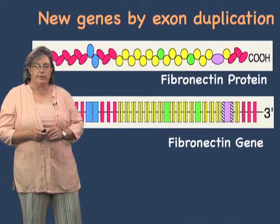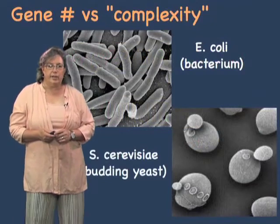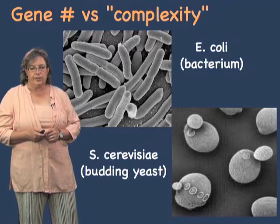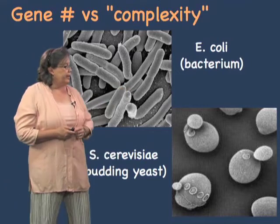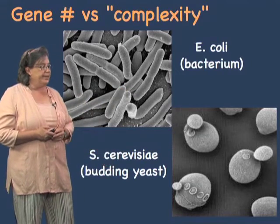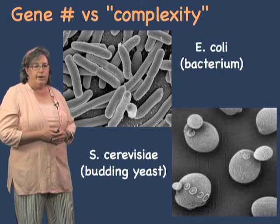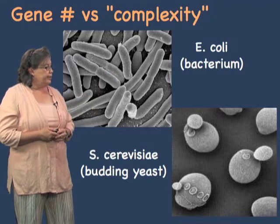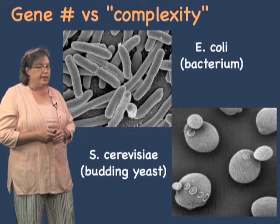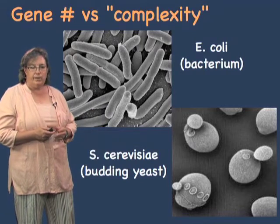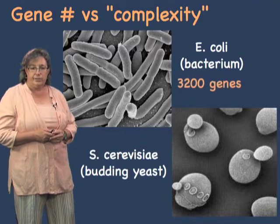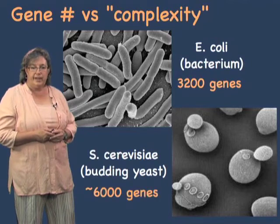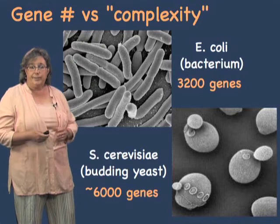We'll discuss this by looking at the gene number versus complexity problem. Let's consider how many genes different organisms have. E. coli, a bacterium in your gut, has about 3,200 genes, and S. cerevisiae, the budding yeast used to make bread or brew beer, has about 6,000 genes. By genes here, I'm talking about protein-coding genes. As expected, the simpler bacterium has fewer genes than the eukaryotic yeast.